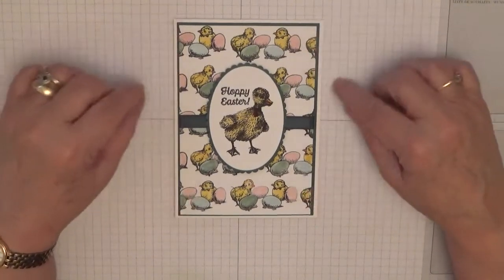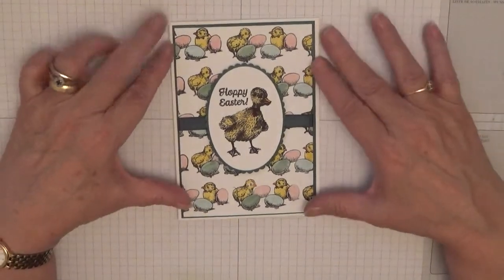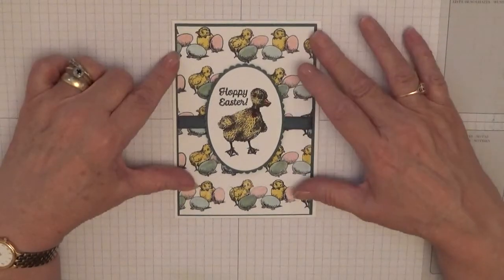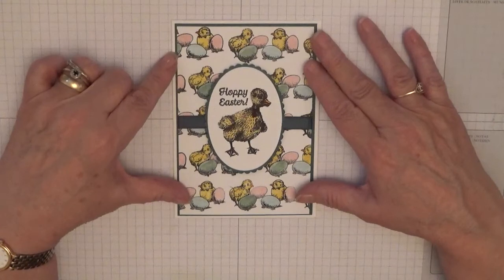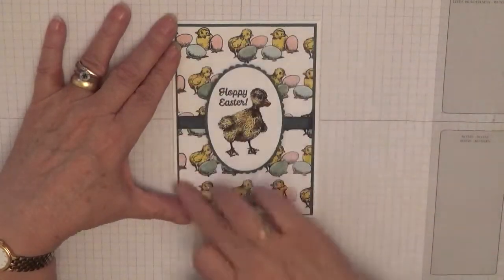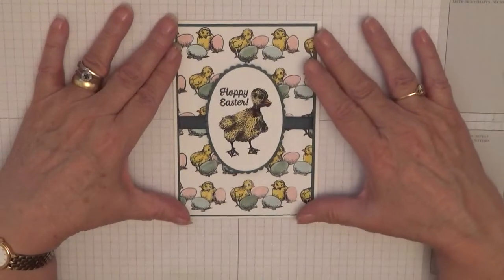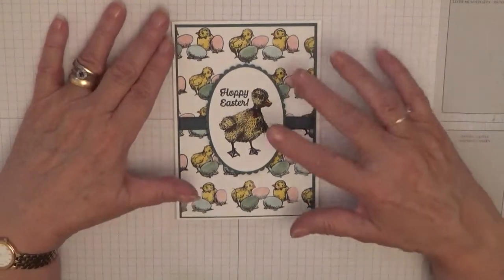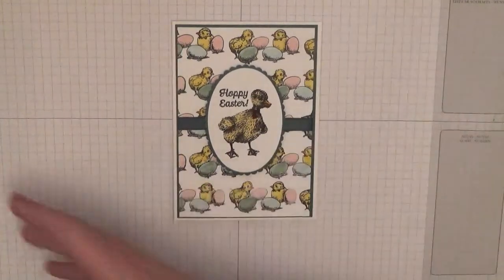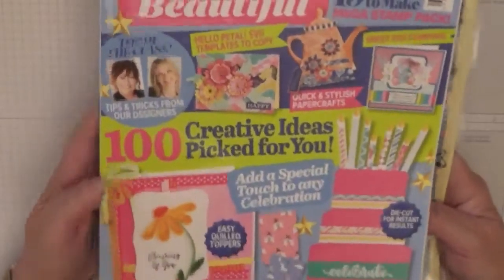She knows I make cards, so she hands my daughter one or two magazines with stamp sets. I really like this stamp set and wanted to make a card with it. Actually my sister made this card and I've cased it from her because she liked the stamp set so much she went out and bought the magazine. The magazine is Craft Beautiful.